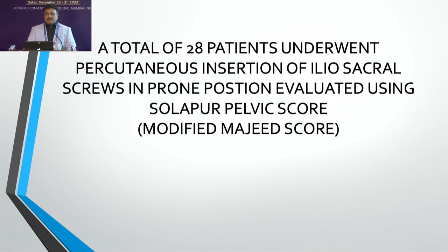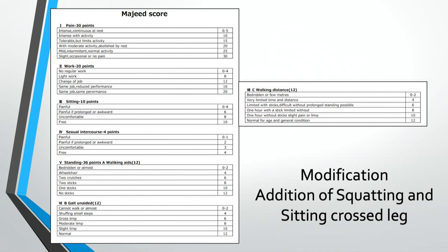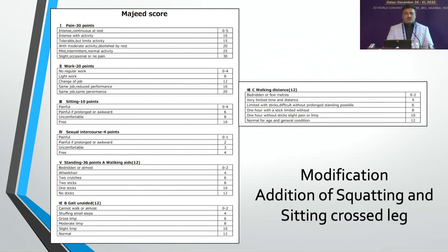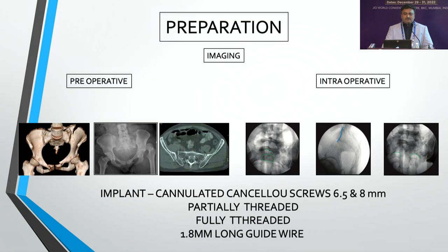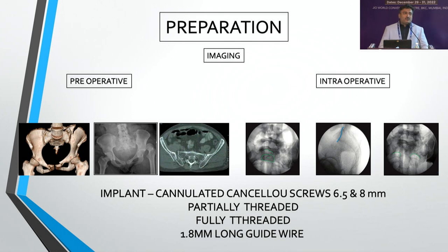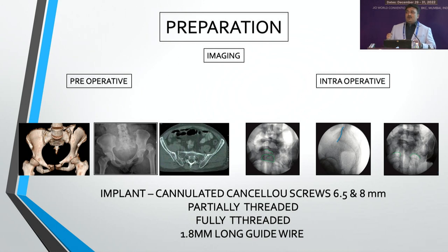Our total of 28 patients were managed and evaluated using the Solapur pelvic score — a modified Majed pelvis score. The Majed score includes pain, work, sitting, sexual intercourse, standing, gait, and walking. What we additionally included is squatting and sitting cross-legged for our farming area patients. What you need is a very good anteroposterior radiograph and 2D and 3D reconstruction images of the pelvis, as well as a high resolution C-arm intensifier intraoperatively.